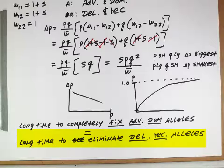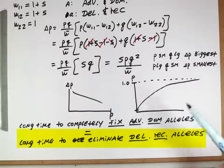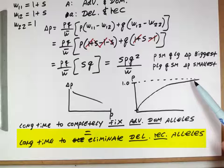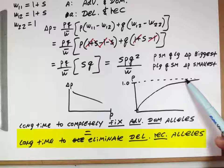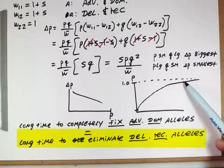And the answer to that concern comes from this relationship here, that it actually takes a very, very long time for a population to get rid of the last few deleterious recessive alleles.